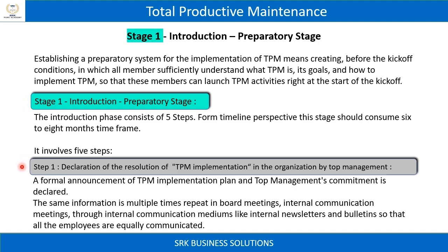Step 1: Declaration of the resolution of TPM implementation by top management. A formal announcement of the TPM implementation plan and top management's commitment is declared. The same information is repeated multiple times in board meetings, internal communication meetings, and through internal communication mediums like internal newsletters and bulletins, so that all employees are equally communicated.